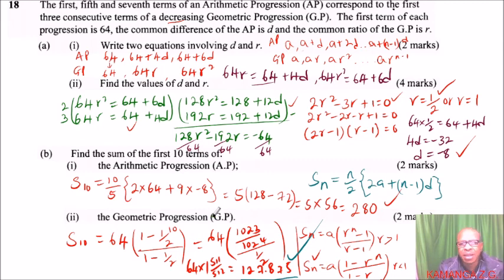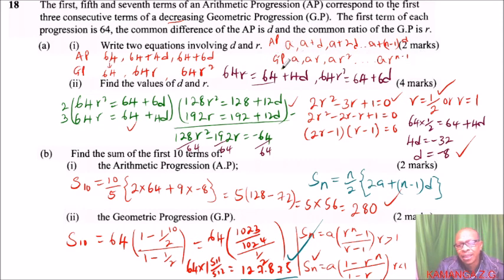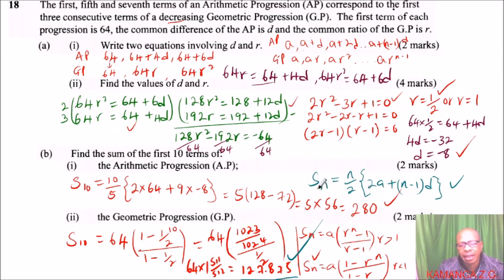The most important things to remember here are the general format of arithmetic and geometric progressions and the sum formulas. When r is greater than 1, use Sn = a(rⁿ − 1)/(r − 1); when r is less than 1, use Sn = a(1 − rⁿ)/(1 − r). That's how you work out this question.